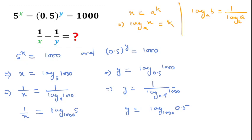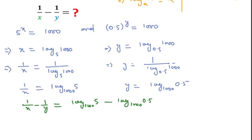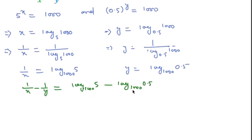Now I will subtract according to the question: 1/x - 1/y equals log base 1000 of 5 minus log base 1000 of 0.5. Since the base of both logs are the same, we will use the formula log a minus log b equals log(a/b).